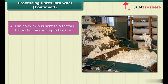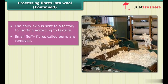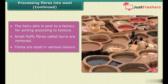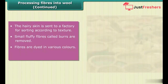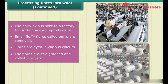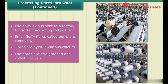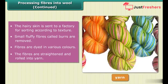The washed hairy skin is sent to a factory where hairs of different textures are separated, or sorted. Small fluffy fibers called burrs are picked out from the hair. The fibers are then dyed in various colors, since the natural fleece of sheep comes in black, brown, or white. Finally, the fibers are straightened, rolled into yarn, and the wool is ready to use.